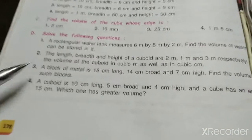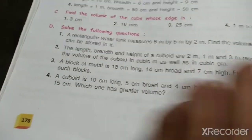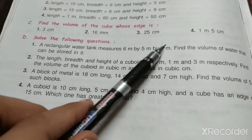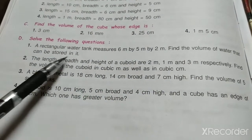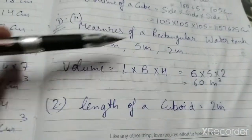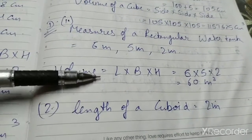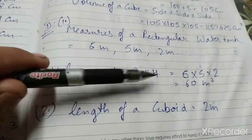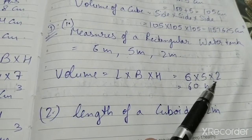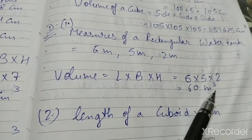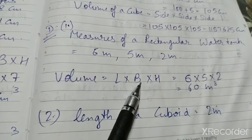Part D is story sums. First: a rectangular water tank measures 6 m by 5 m by 2 m. Find the volume of water the tank can store. Length, breadth, and height are given. Volume = L × B × H = 6 × 5 × 2 = 60 m³. That is the answer to the first story question.